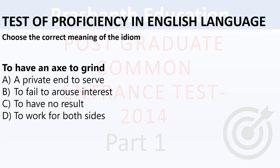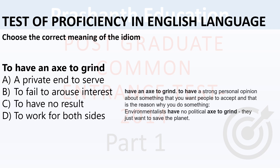Next idioms section. 'To have an axe to grind' — options: a private end to serve, to fail to arouse interest, to have no results, to work for both sides. 'To have an axe to grind' means to have a strong personal opinion about something that you want people to accept, which is the reason you do something. Example: 'Environmentalists have no political axe to grind — they just want to save the planet.' Correct answer: A — a private end to serve.